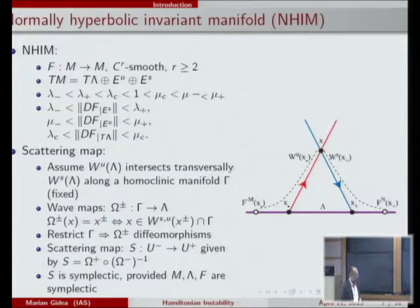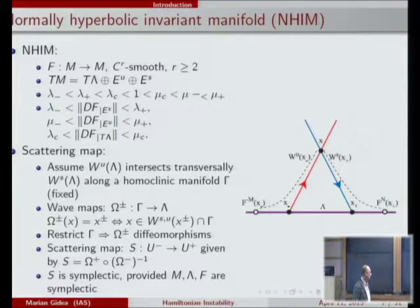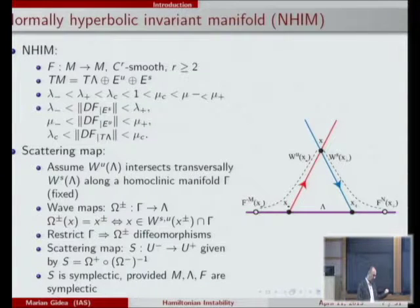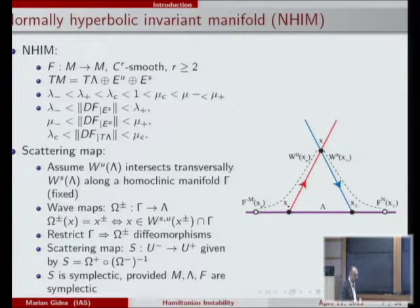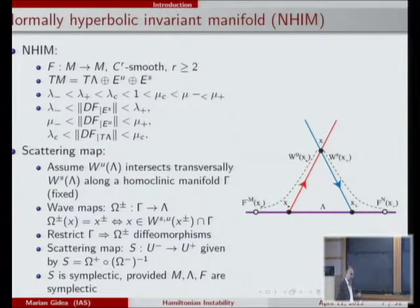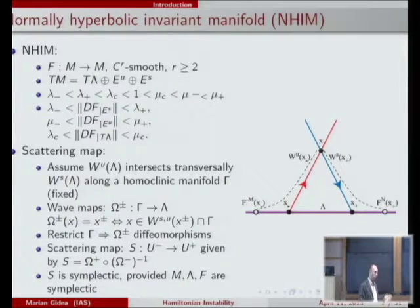Other important geometric objects are a normally hyperbolic invariant manifold (NHIM) and the concept of a scattering map. A NHIM is like the previous picture but the hyperbolic orbit is replaced by a whole manifold. In the normal directions you have an unstable bundle with exponential expansion and a stable bundle with exponential contraction, while the rates along the manifold itself are dominated by the normal directions.